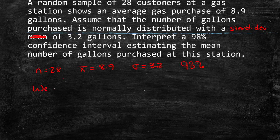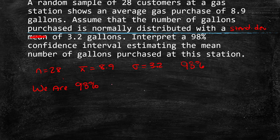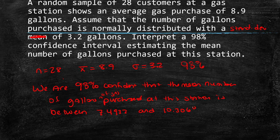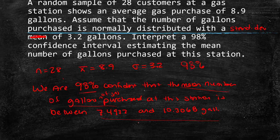So now we just have to go back to our problem and interpret. Our interpretation says we are 98% confident that the mean number of gallons of gas purchased at the station is between 7.4932 gallons and 10.3068 gallons. So notice that we say how confident we are. We say what we're talking about. The mean number of gallons of gas purchased. And then we state our interval. So we're saying the mean, the true mean, is somewhere between 7.4932 and 10.3068.